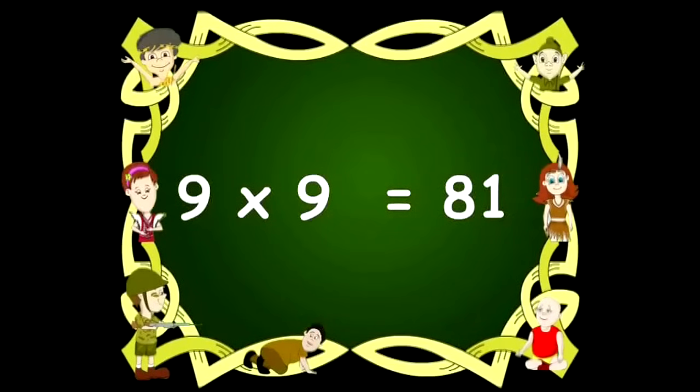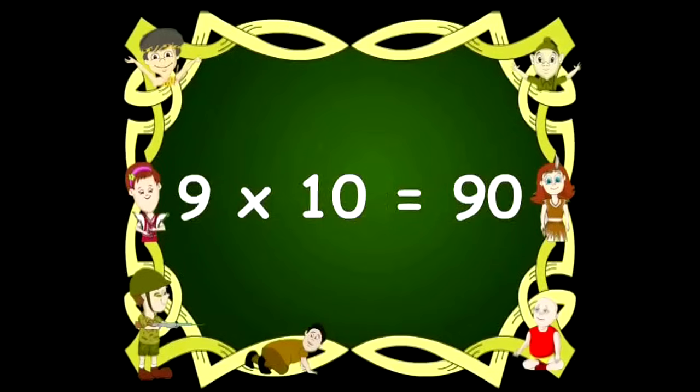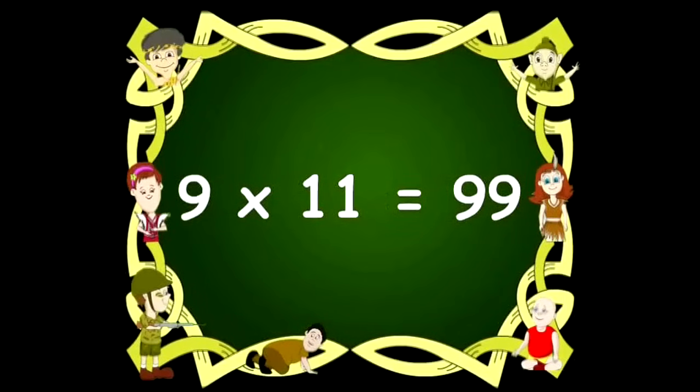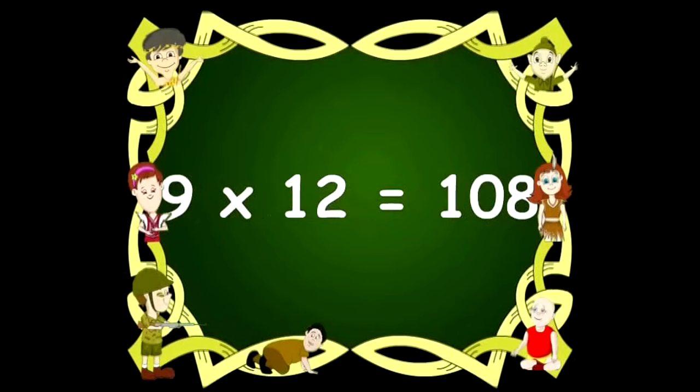Nine nines are eighty-one. Nine tens are ninety. Nine elevens are ninety-nine. Nine twelves are one hundred and eight.